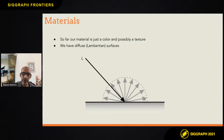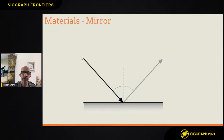For other kinds of materials it would be not as diffuse. If you take a mirror, for example — which is the other extreme from the Lambertian surface — the mirror would have only one point of exit because it's a perfect mirror, reflecting around that normal. And that's how you get the mirror effect.